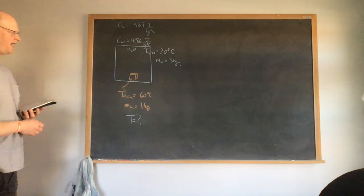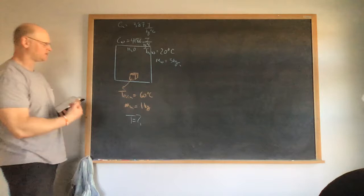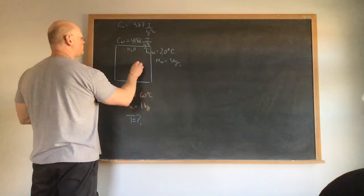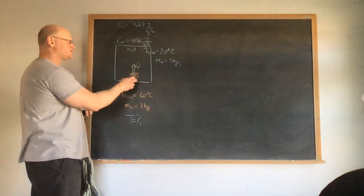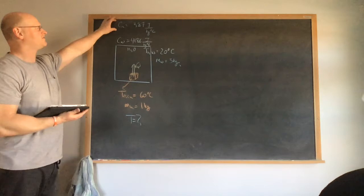We want to know the equilibrium temperature this system achieves. Heat will flow out of the copper into the water, causing the water to increase its temperature while the copper decreases its temperature. The specific heat of copper is 387 J/kg°C, and the specific heat of water is 4,186 J/kg°C.